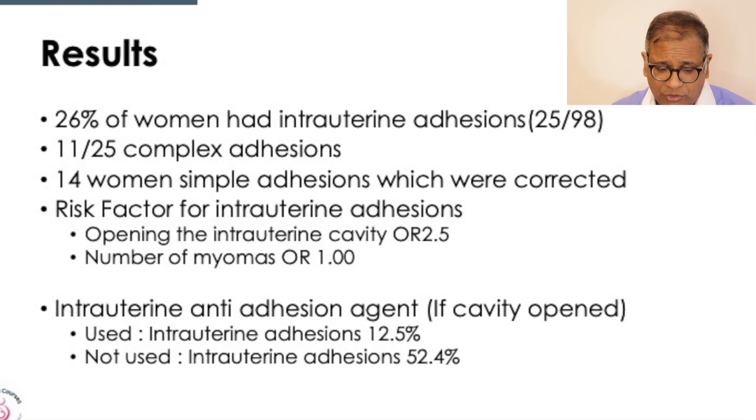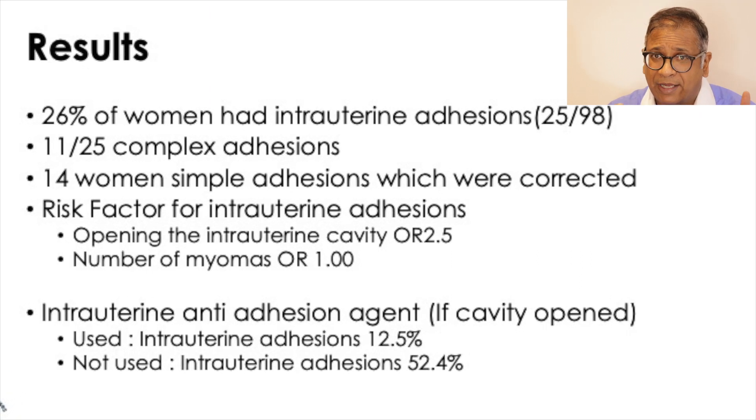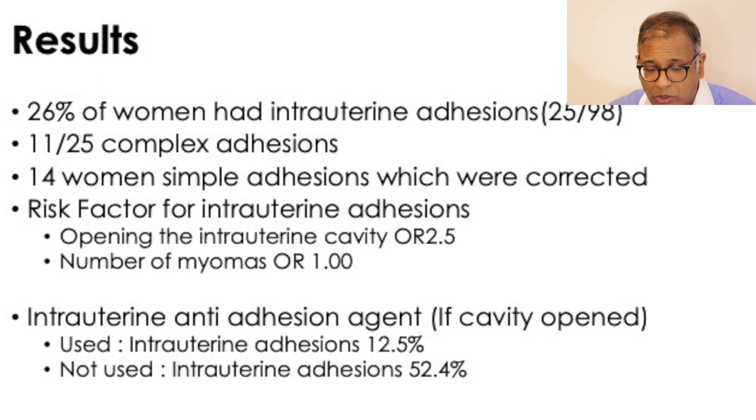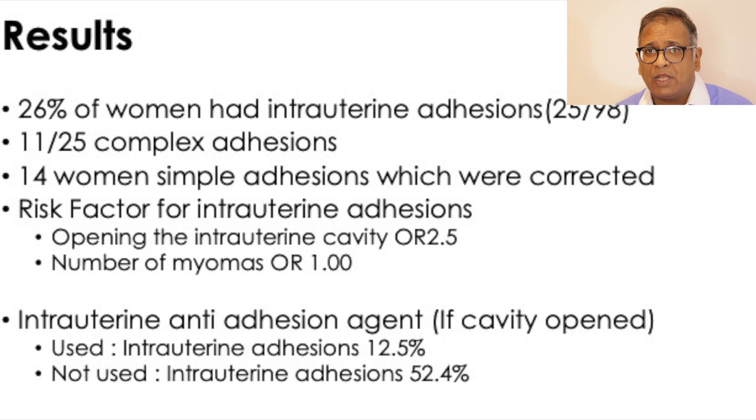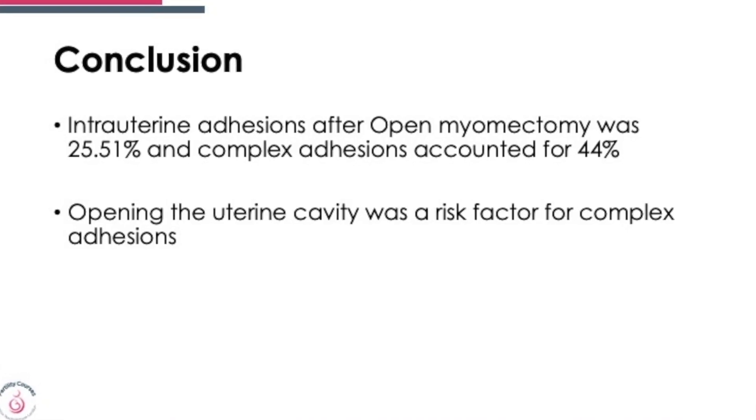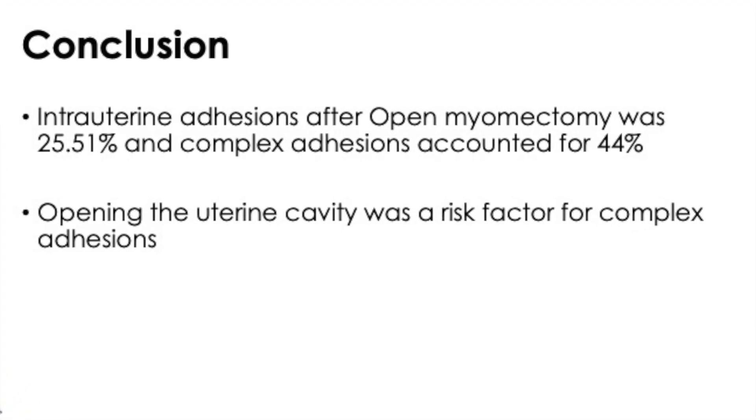What is the risk factor for adhesions? Opening the cavity was the single most important risk factor for dense adhesions, at an odds ratio of 2.5. The number of myomas did not make a huge difference. If you used intrauterine barrier gel, your chance of having intrauterine adhesions was lower than if you did not. Even when you have not opened the cavity in large fibroids, you seem to cause a mild amount of adhesions, which do not seem to have a huge effect on success rate. But if you open the cavity, the evidence shows you not only cause true serosal to endometrial damage, but you also give a higher chance of dense adhesions — and this is probably one of the major risk factors when deciding to go for a myomectomy.